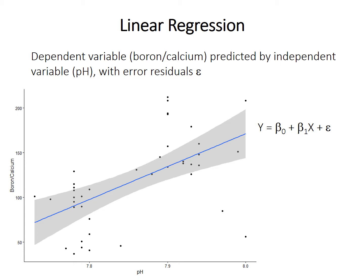Remember, residuals are the distance from each point down or up to the regression line itself. This does an okay job of explaining the relationship — it's not a great job, and there's definitely a lot of scatter around this line. The best fit relationship is this equation here, and the R-squared is 0.33. That indicates that only 33% of the variation in boron-calcium can be accounted for by changes in pH. That's not great.